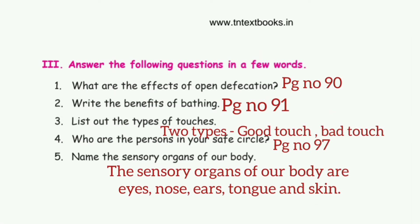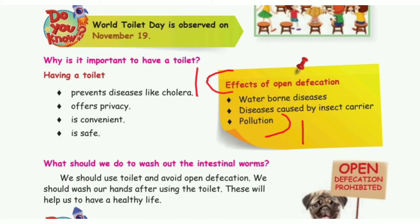Answer the following questions in a few words. First question: what are the effects of open defecation? Take page number 90, the blue color box. The answer is: waterborne diseases, diseases caused by insect carriers, and pollution.